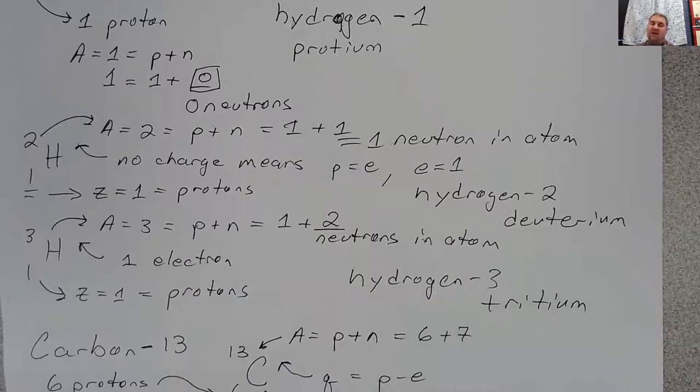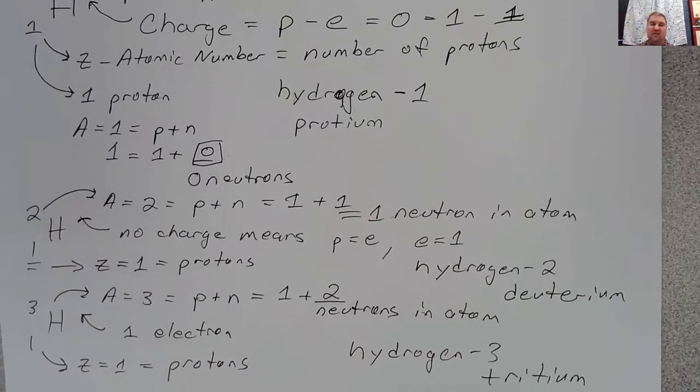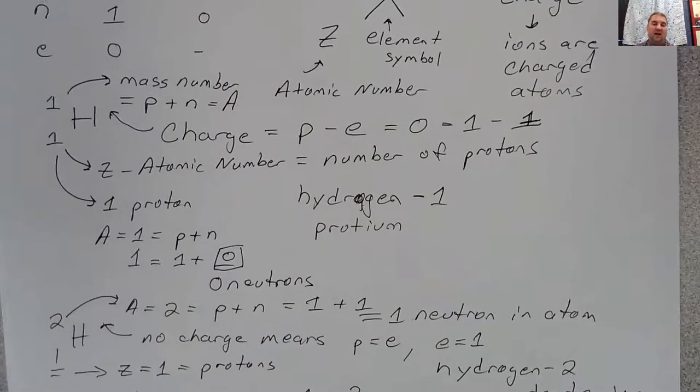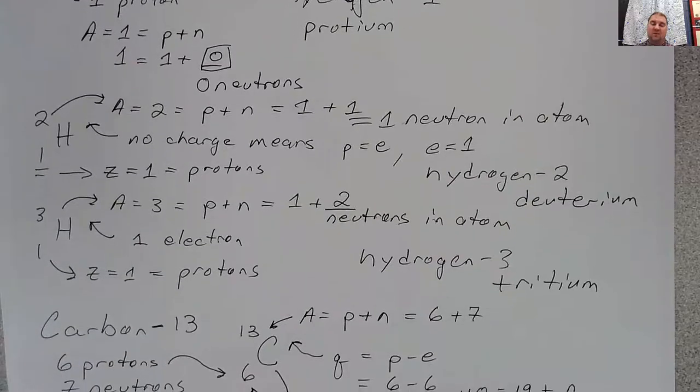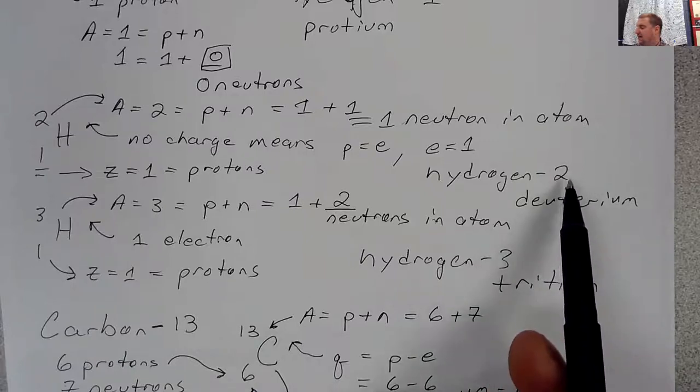And tritium is, in fact, separated out down at the Savannah River site as a part of their national defense mission. And so that is relatively local for South Carolina, at least. So these are the only three isotopes that have special names. Hydrogen one is proteum. Hydrogen two is deuterium. Hydrogen three is tritium. Remember, the name is related back to the mass number for these special cases, except for the proteum, where it's just one.